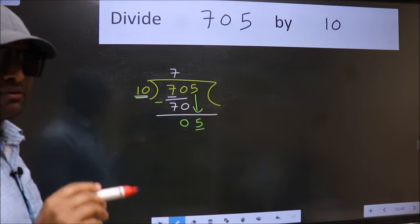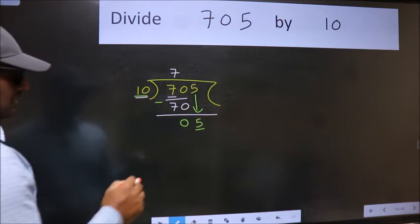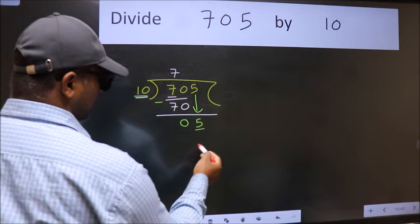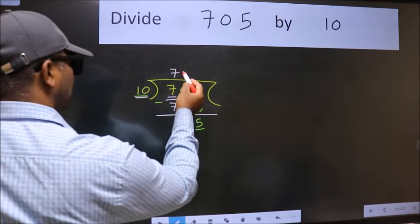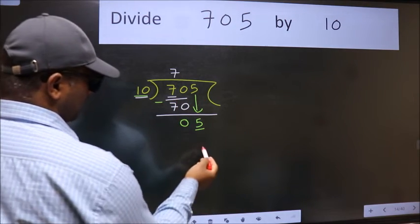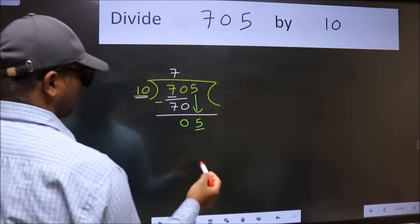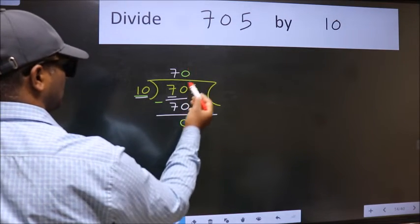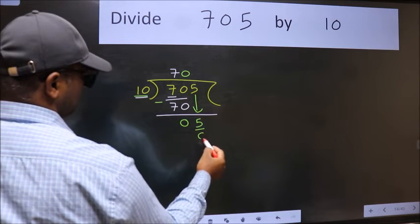Instead of that, what we should think of doing is which number should we take here. If I take 1, we will get 10. But 10 is larger than 5. So what we do is we take 0. So 10 into 0, 0.